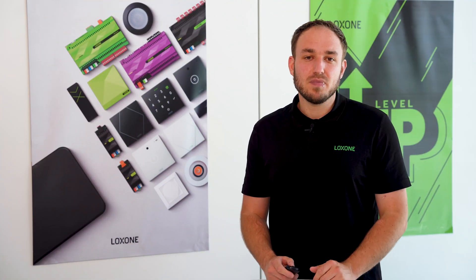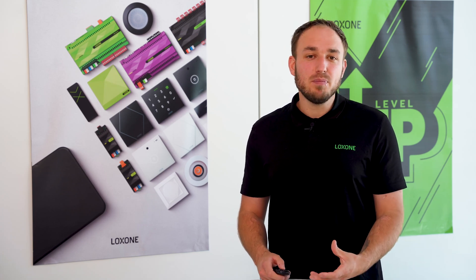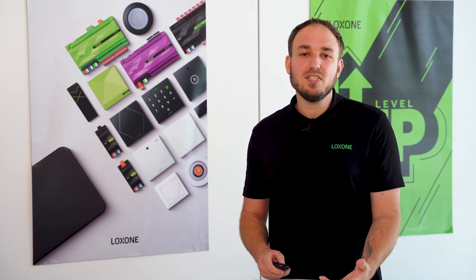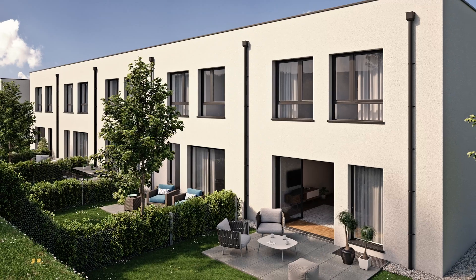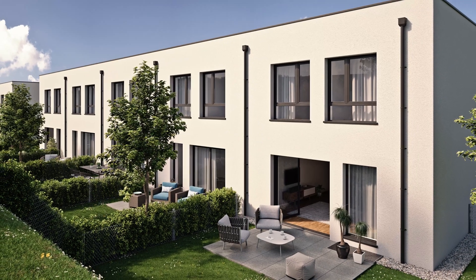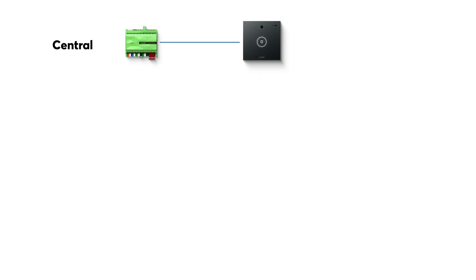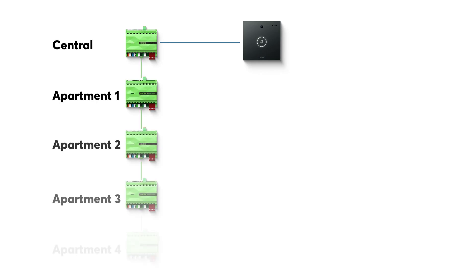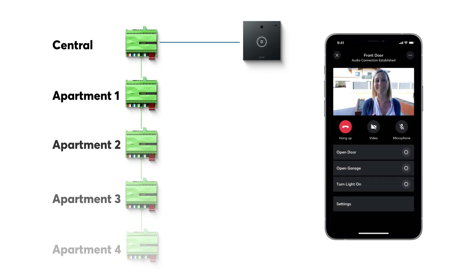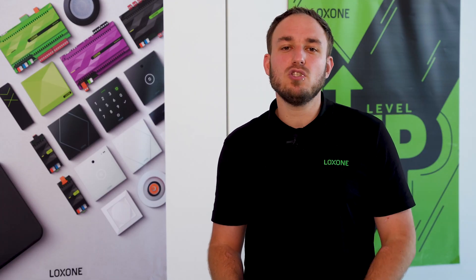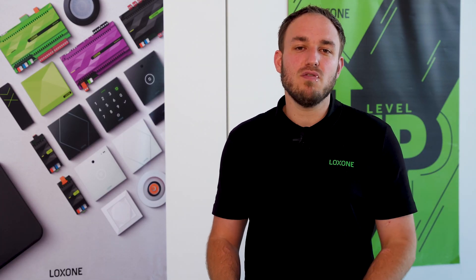Intercom Trust. Use one intercom for several mini-servers. In apartment buildings, for example, different mini-servers are already being used for different apartments, and this trend will continue to grow with the mini-server compact. Not every resident should see who is ringing the bell — only when the bell is ringing at their own apartment. In the future, it will be easier to release the intercom via trust from a central mini-server to the respective mini-server of each apartment.